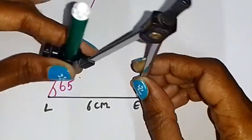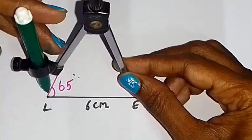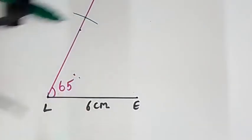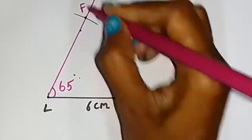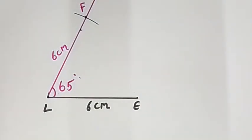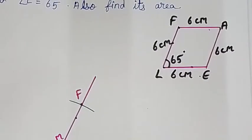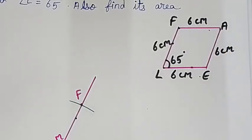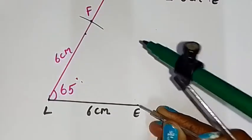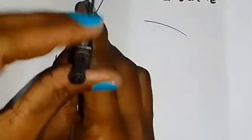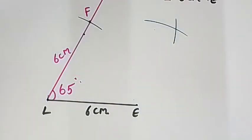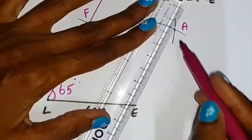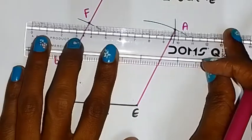Taking a compass with 6 cm measurement, we mark point F along the 65-degree line from L. So LF is 6 cm, and LE is 6 cm. Now mark point A using arcs of 6 cm from both E and F to find the intersection. So all sides: LE, EF, FA, and AL are each 6 cm. The rhombus LEAF is now constructed.